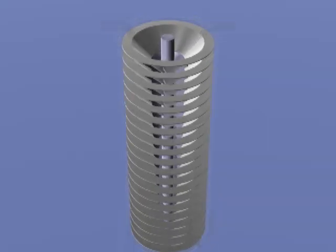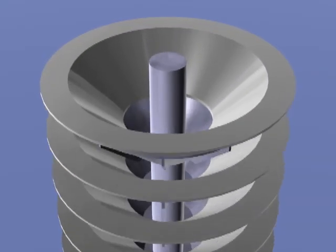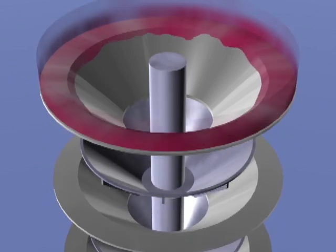Inside the spinning cone column are about 40 upside down cones, half of which are fixed and half of which spin.